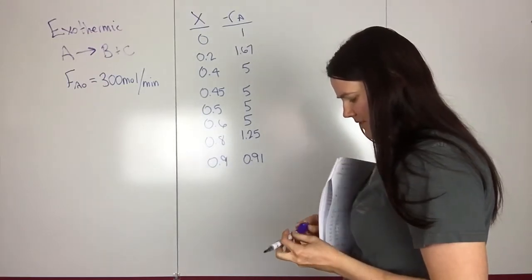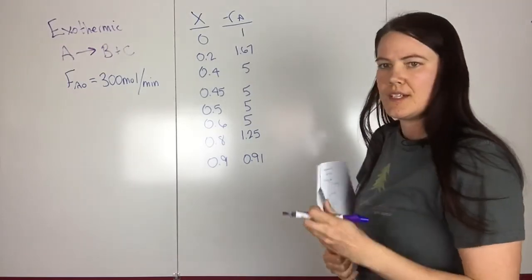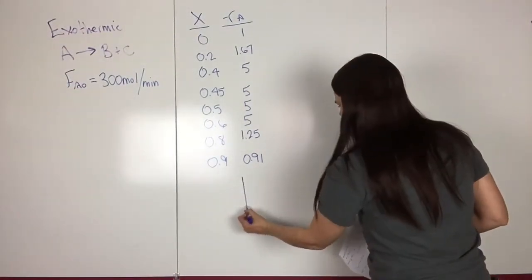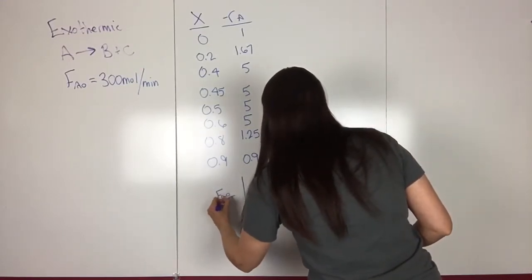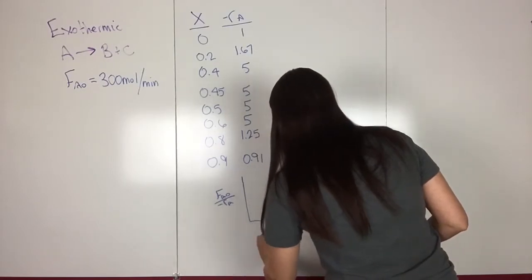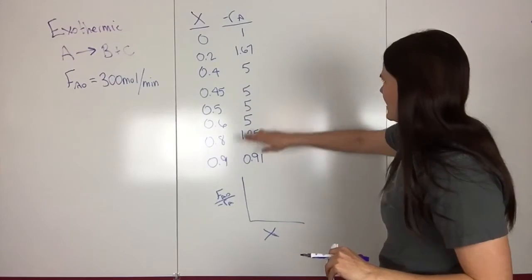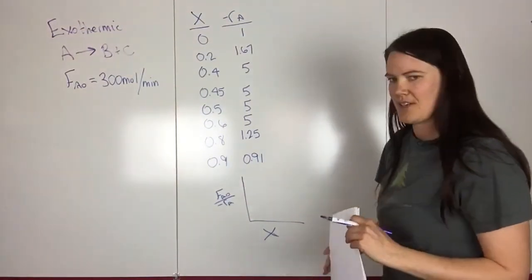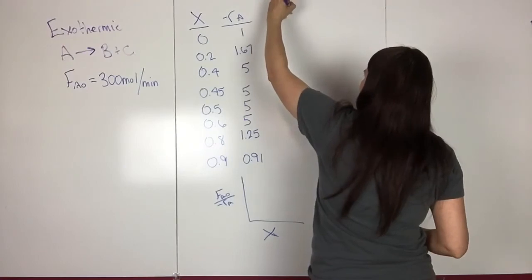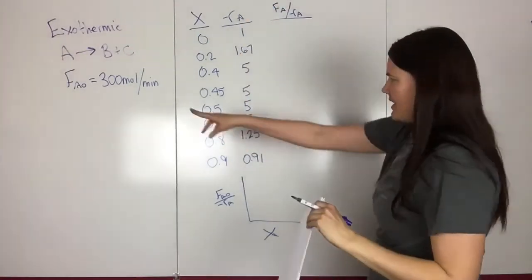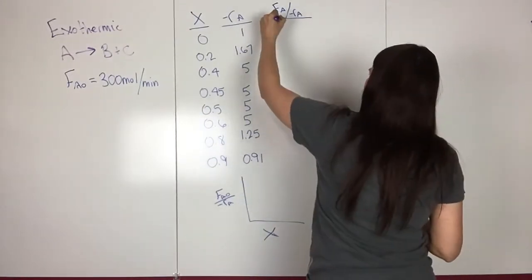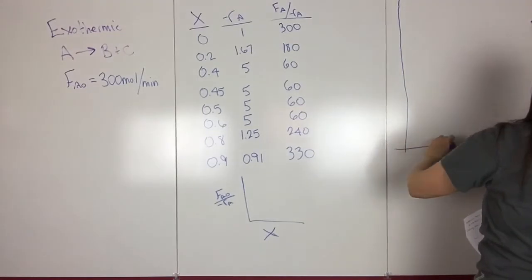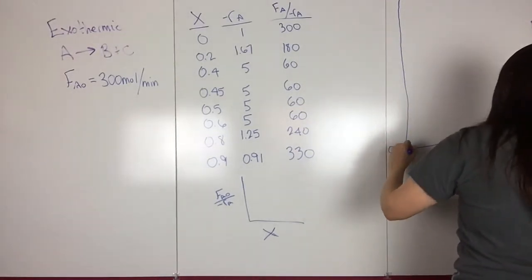And the easiest way to solve this problem is going to be from a plot. So we want to make a plot. And the plot we want is going to be FA0 over -RA versus X. So we have everything we need for that. So the way I usually do this is I'll make another column with whatever I'm plotting. So FA0 over RA. And we know what FA0 is. So I just went through and calculated all these. So this one's 300. And then we want to go ahead and plot this.